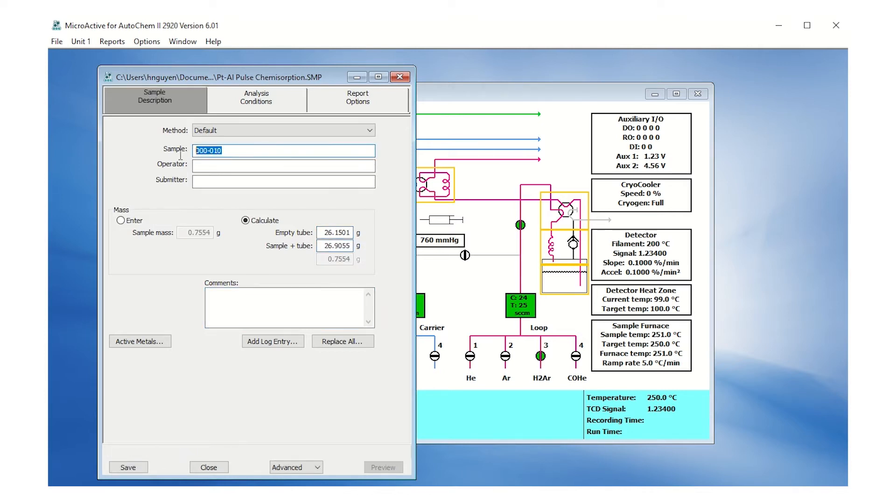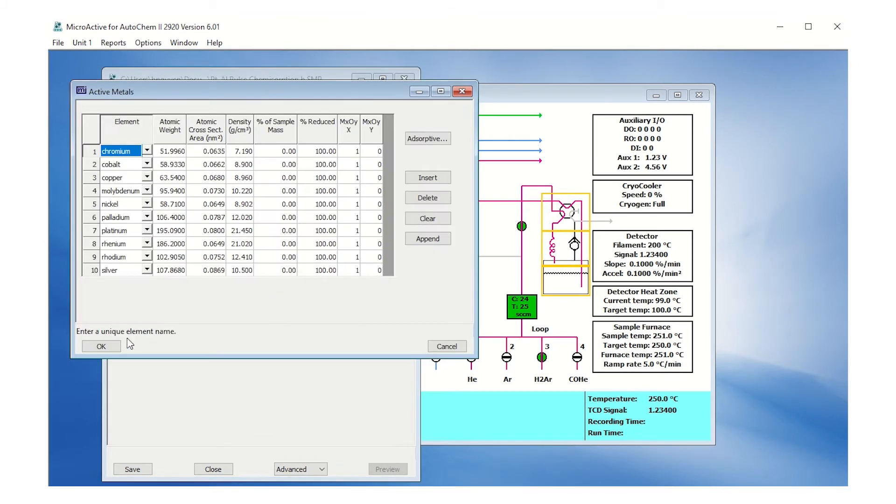Under the sample description tab, fill in the sample and operator ID. Click on the active metals tab. Under the platinum row, change the percentage of sample mass.